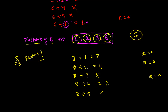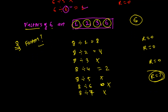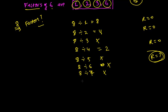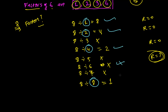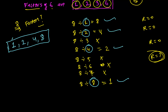8 divided by 5, you can't divide it. 8 divided by 6 and 8 divided by 7 also don't divide exactly — a remainder will come, and we don't want any remainder. But 8 divided by 8 gives 1 exactly. So the numbers 1, 2, 4, and 8 are exactly dividing 8 without any remainder, and that is why 1, 2, 4, and 8 are called the factors of 8.